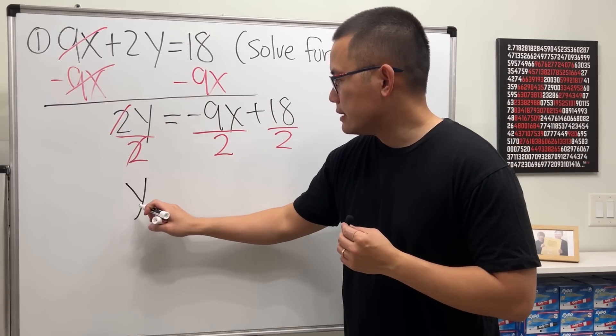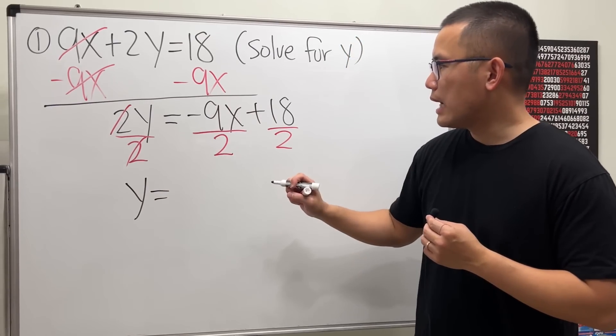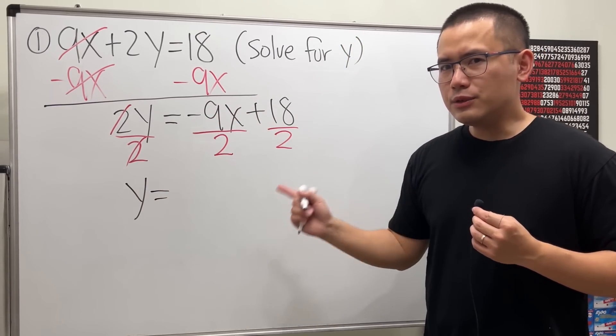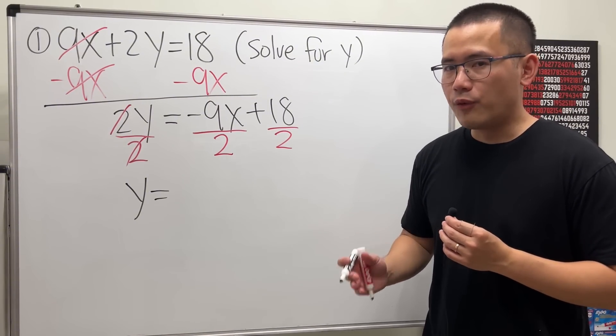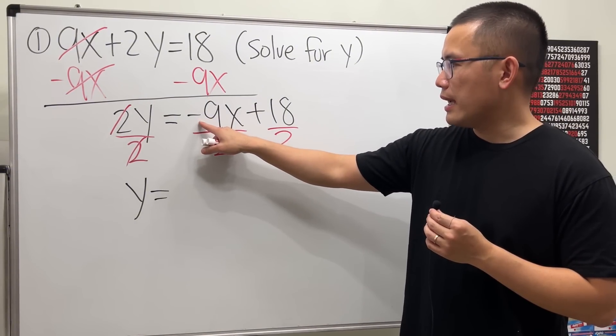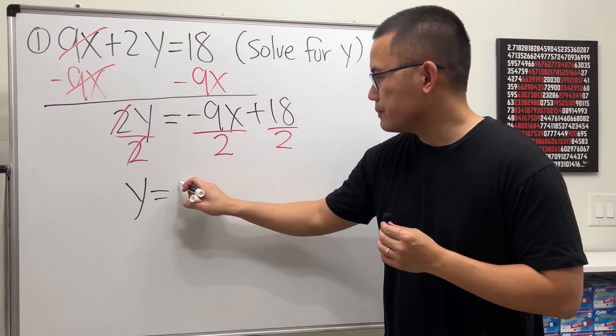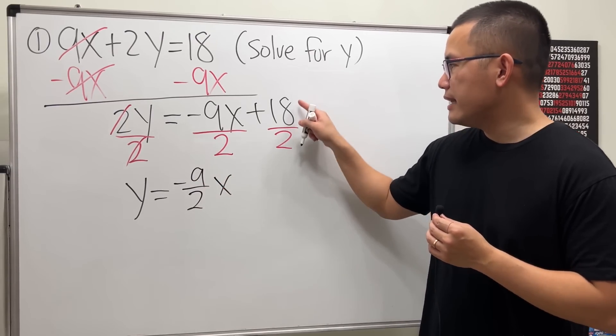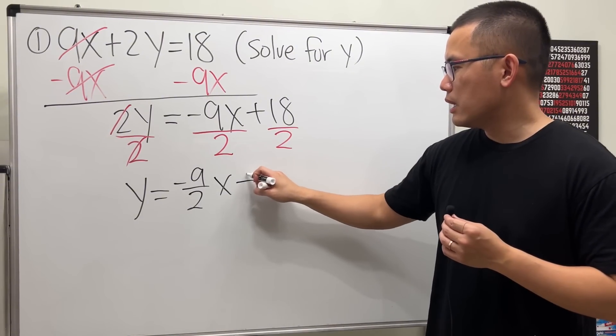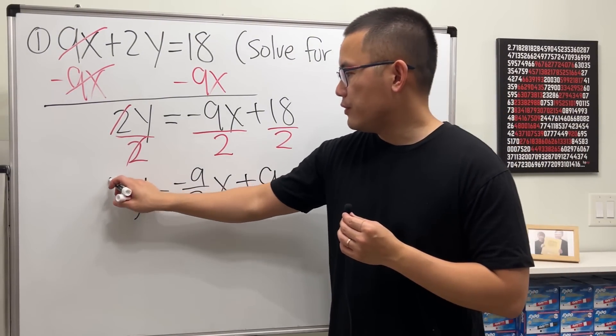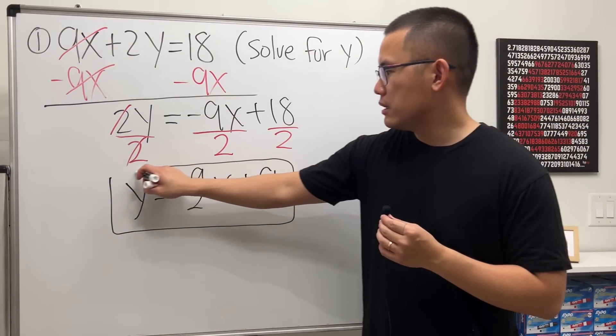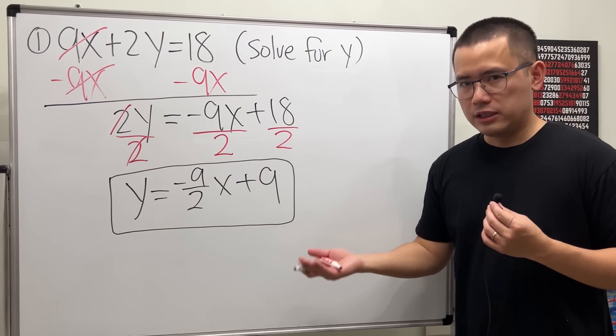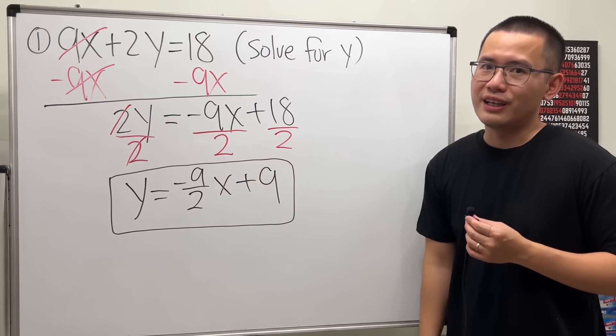Finally, y is now by itself, and we just work this out. You can write negative 9x over 2 like this, but this right here is in the equation of a line form. So I would like to write it as negative 9 over 2, and then put the x on the side, and then let's work out 18 divided by 2, which is 9. And if you are doing the equation of a line, this is the so-called y equals mx plus b, the slope intercept form, and this is the form you want to be looking at.